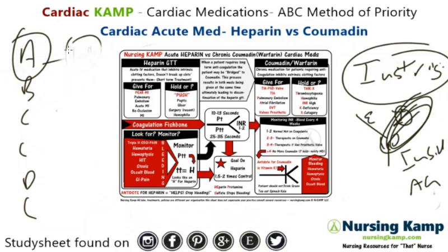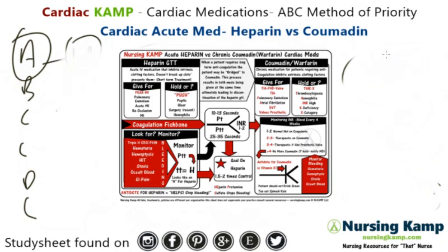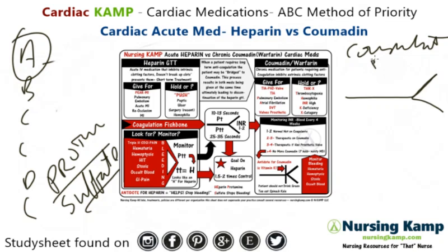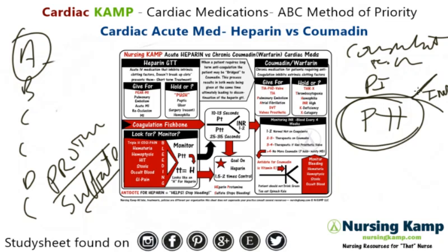What's specific about heparin: when heparin is given, you always need two IV lines because you might need an antidote. The antidote for heparin is protamine sulfate. When looking at the coagulation fish bone, we have PT, PTT, and INR. For heparin, we monitor the PTT — and PTT kind of looks like an H, which stands for heparin.